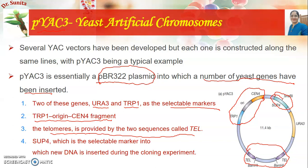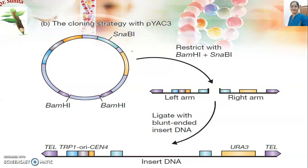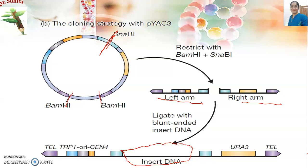How can we use YACs during cloning? The vector is restricted with BamHI and SnaBI, which cuts it into two arms: a left arm and a right arm. Then the desired DNA is ligated using DNA ligase enzyme and inserted into the SUP4 selectable marker sequences. In this way, we can use pYAC3 in gene cloning.